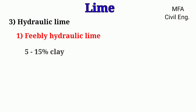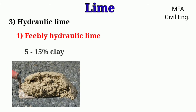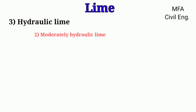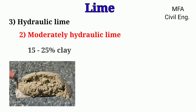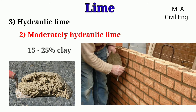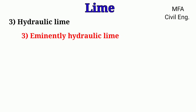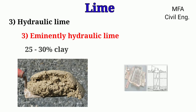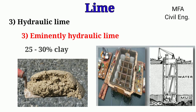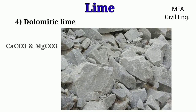Depending on the percentage of clay, hydraulic lime is of three types. Feebly hydraulic lime contains 5 to 15 percent clay and forms a mortar which is reasonably strong, used for ordinary masonry work. Moderately hydraulic lime contains 15 to 25 percent clay and is stronger than feebly hydraulic lime mortar, used in superior masonry work. Eminently hydraulic lime contains 25 to 30 percent clay, produces even stronger mortar, and is used in foundation work under water.